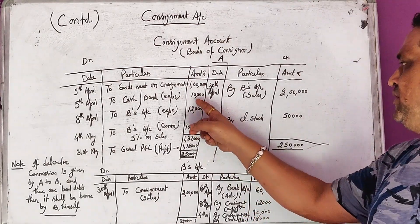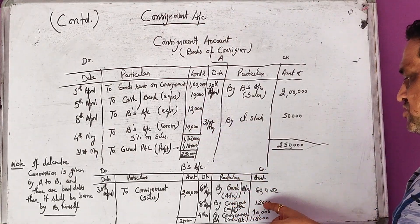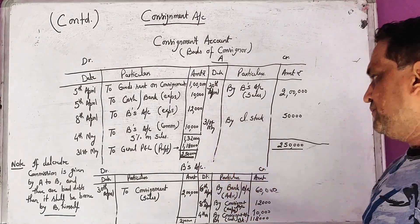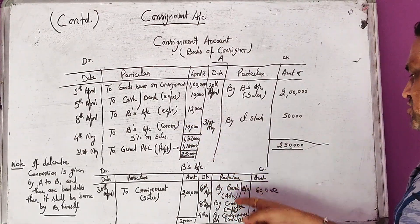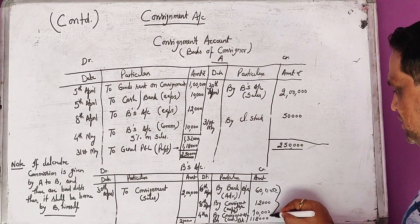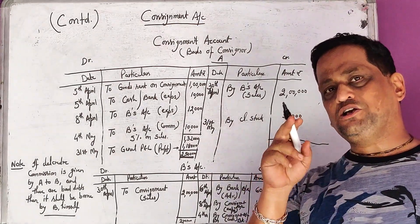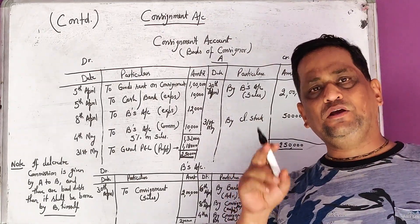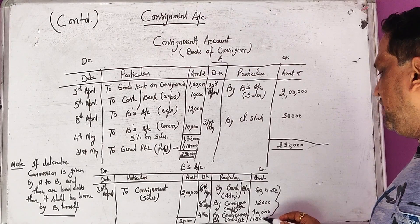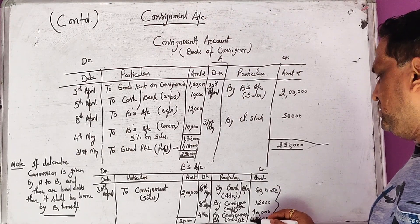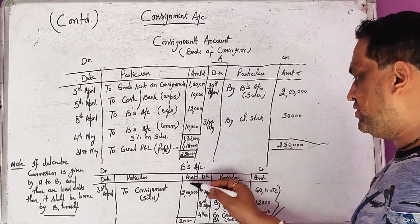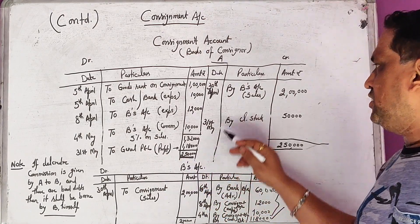Then B deducts his expenditure of 12,000, posted on the credit side as 'by consignment' with 12,000. Then commission of 10,000 is also adjusted and credited. From the total sale of 2 lakhs, three items are adjusted: advance, expenses, and commission. The remaining amount in the hands of the consignee — 1,18,000 — is refunded by B to A, as that is the total amount A is entitled to receive.